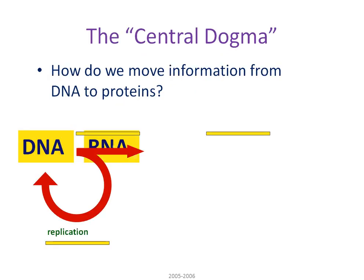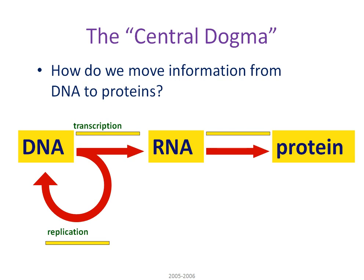The central dogma. How do we move information from DNA to proteins? DNA is a nucleic acid and it's an information-storing molecule, with information stored in the sequence of adenines, guanines, cytosines, and thymines within that double helix.